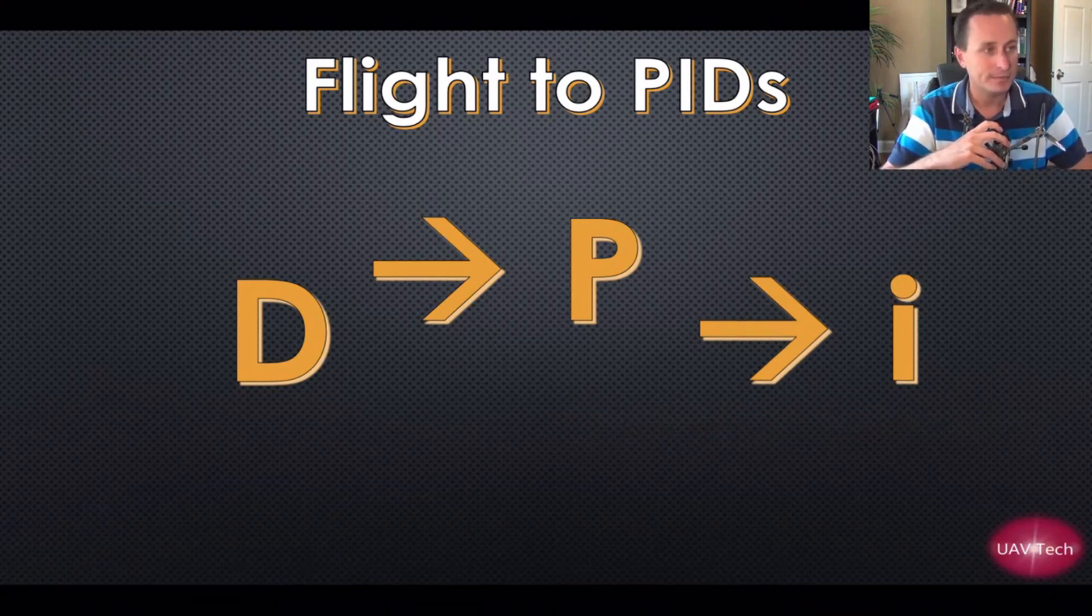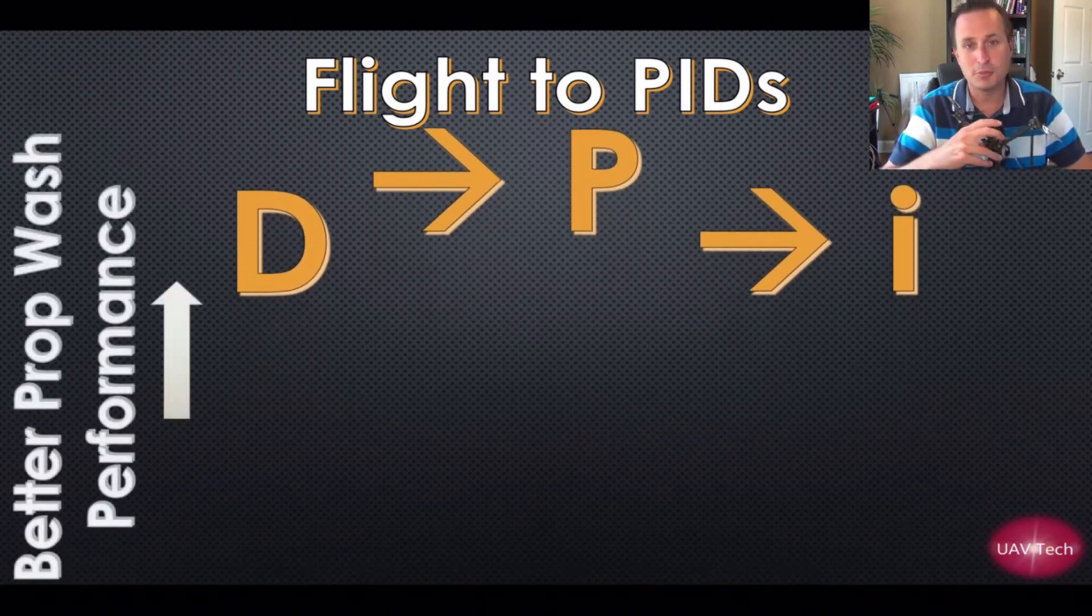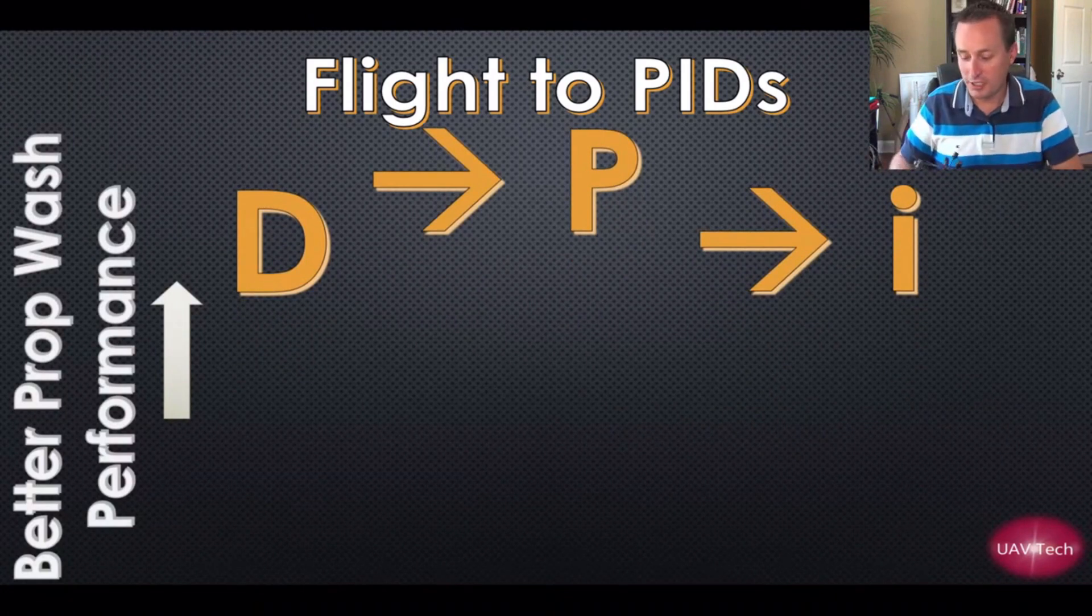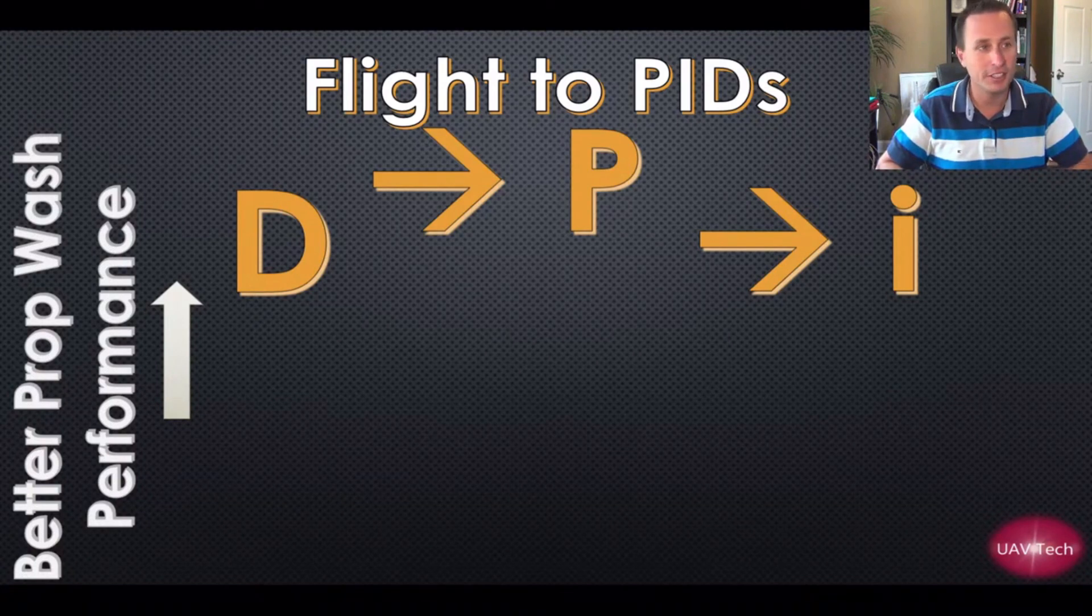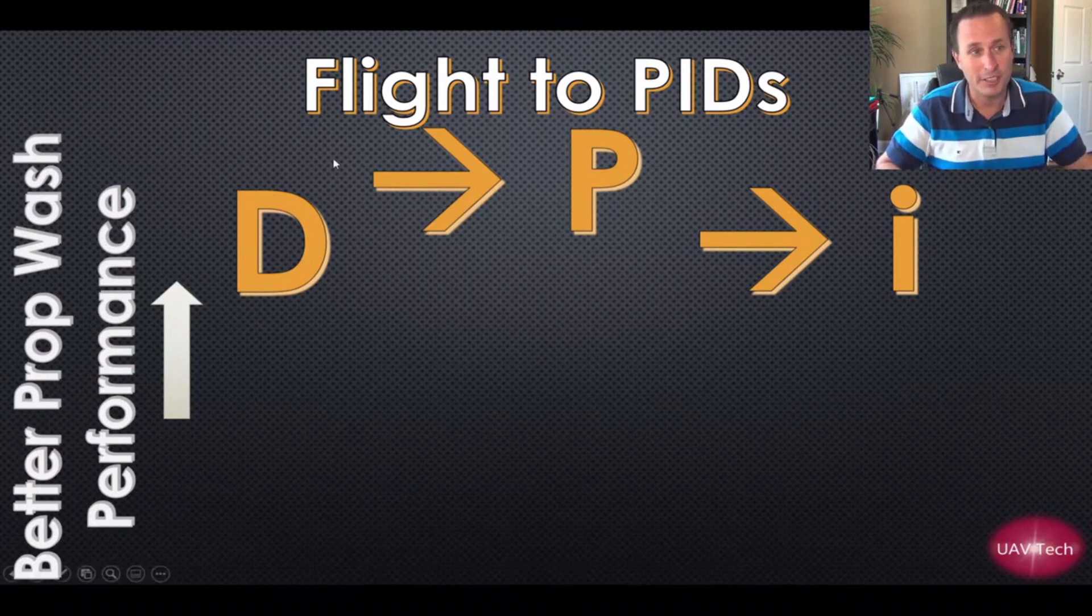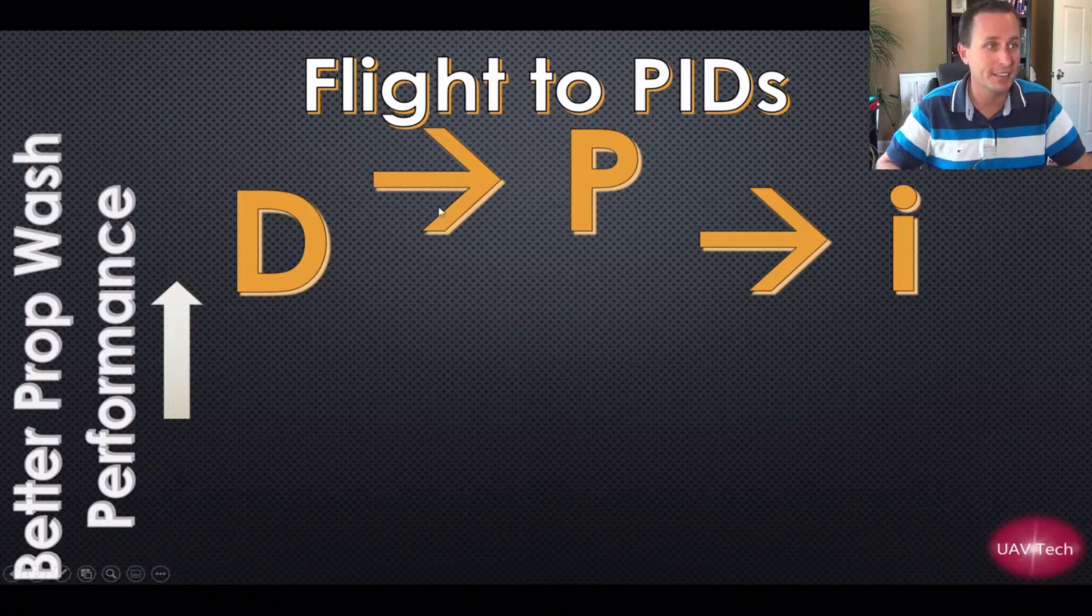This is a big one: when you want to increase your prop wash performance, you raise them all. You move the whole thing up. Like if your nose tracking is good and your wobble is good, you really are raising your D term to increase prop wash performance, but with that the P and the I come along for the ride. Because if you just raise the D, well now you're going to mess up - you could start to be over dampened again and you're going to have a looser feel.